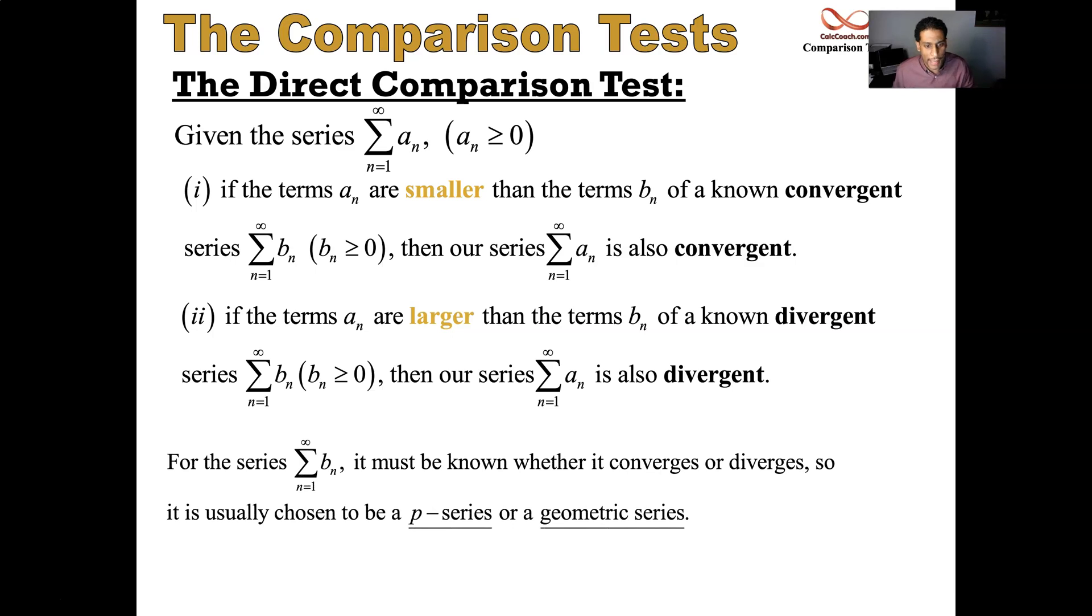Some technicalities we want to look at. For the series b sub n, the one that you go out and get, you got to know whether or not it converges or diverges. Now to do that, we usually choose a P series or a geometric series.